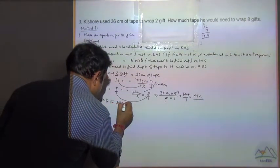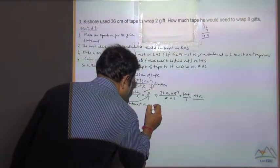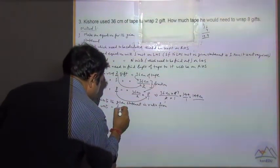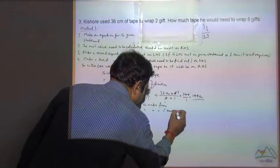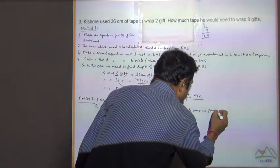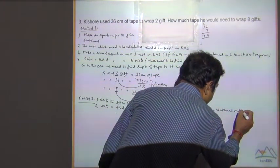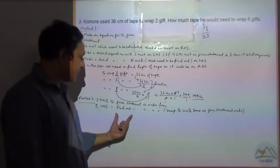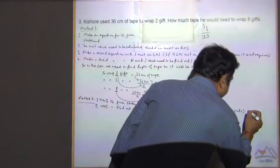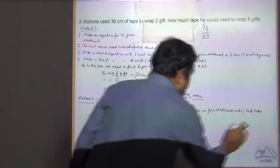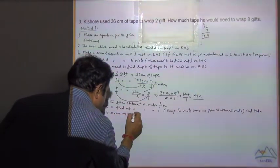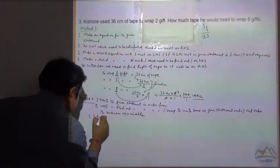Method 2: Write the given statement in ratio form, keeping the same units as in the given statement. Take the unknown quantity as a variable, then solve for the variable.